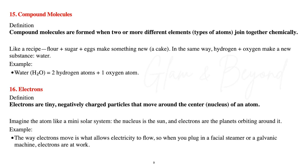Number fifteen, compound molecules. Compound molecules are formed when two or more different elements join together chemically. Like a recipe — flour plus sugar plus eggs make something new, like a cake. In the same way, hydrogen plus oxygen make a new substance: water. Example: water H₂O equals two hydrogen atoms plus one oxygen atom.